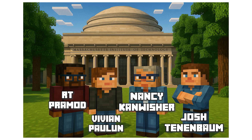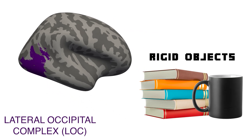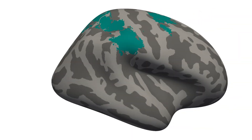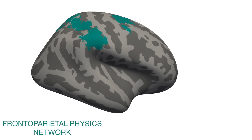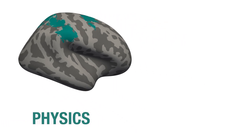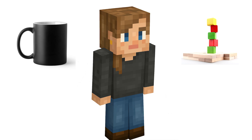We know from previous studies that the lateral occipital complex, or LOC, processes the 3D shape of rigid objects. We also know that a network in the frontoparietal cortex becomes active when we think about the physics of an object, like the stability of a block tower. But these studies only looked at rigid objects, and we don't live in a rigid Minecraft world.